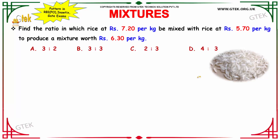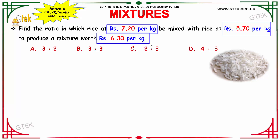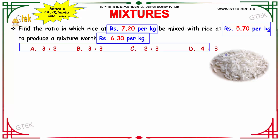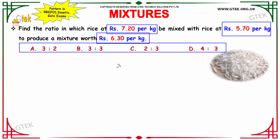Let us see our next interesting example. We have to find the ratio in which rice at Rs.7.20 paise per kg can be mixed with rice at Rs.5.70 paise per kg to produce a mixture worth Rs.6.30 paise per kg. The options are over here. We have to see how we can mix the two rices in order to produce a mixture which can be sold at a rate of Rs.6.30 per kg.